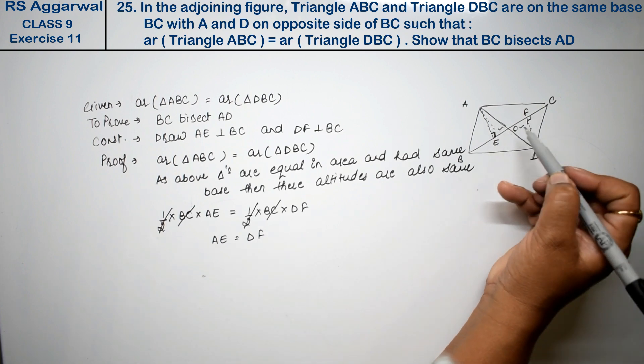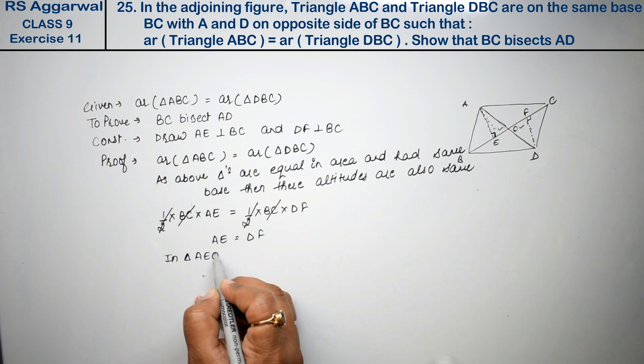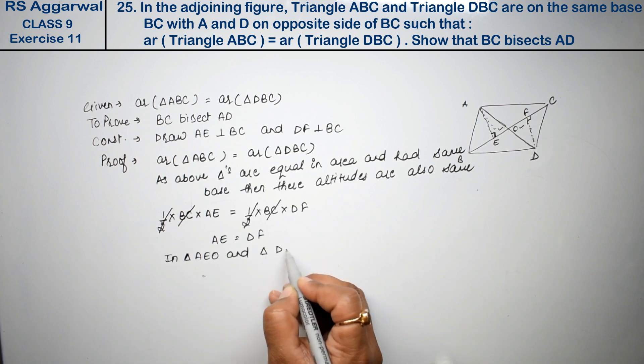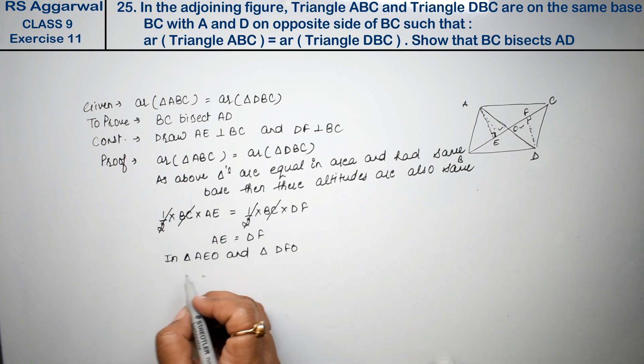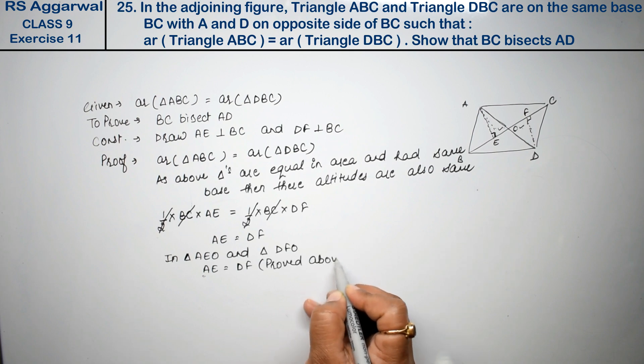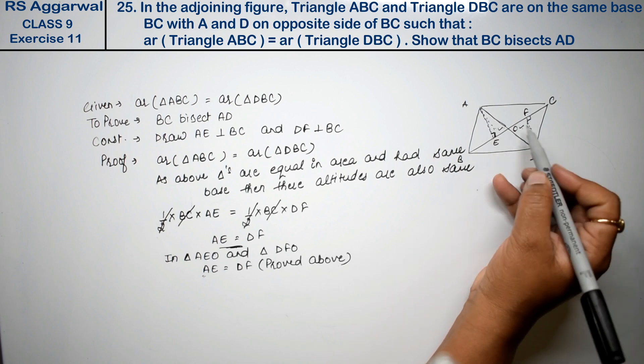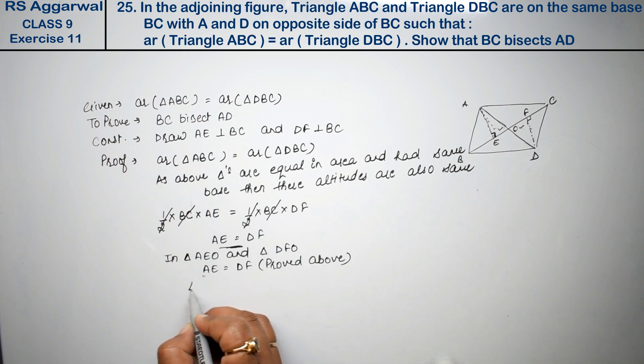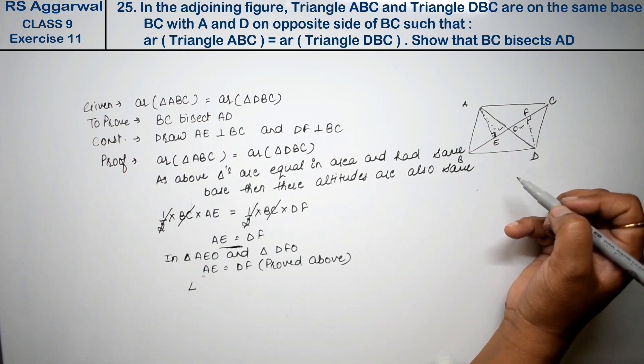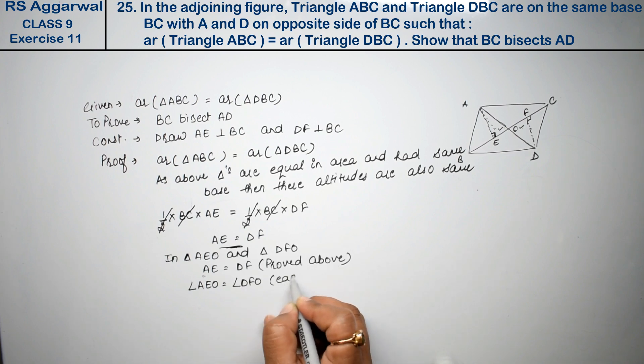Now in these two triangles AEO and triangle DFO, what have we proved? AE is equal to DF, proved above. Angle AEO is equal to angle DFO, each is 90 degree, because we know that when the altitudes get down to the base, it is a 90 degree angle.